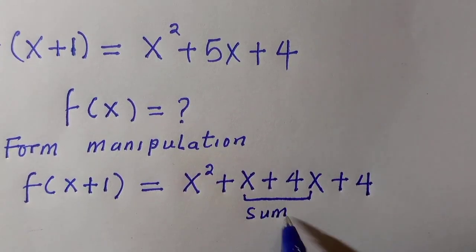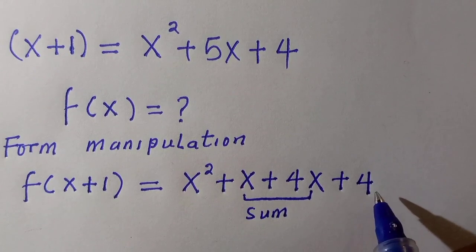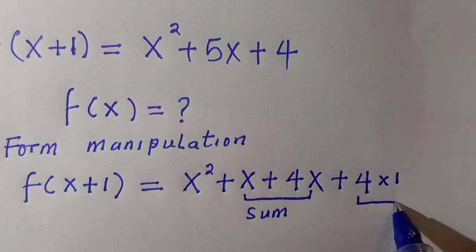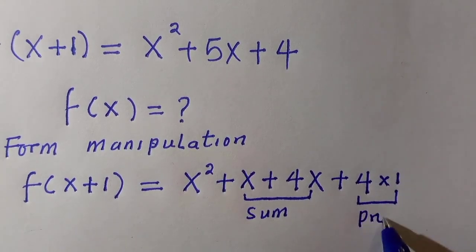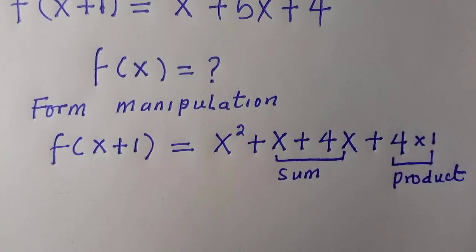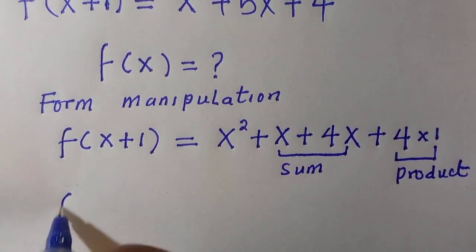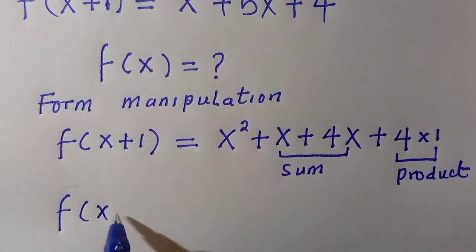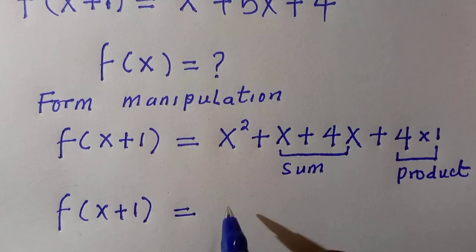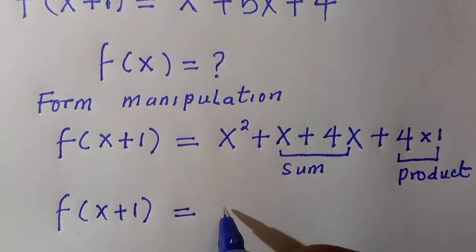What I do here is I try to split this. These are sum, and this is a product. We multiply this by 1, so it's known as the product. All right, so after getting this, we are going to factorize it. And here we have f(x+1) equals,